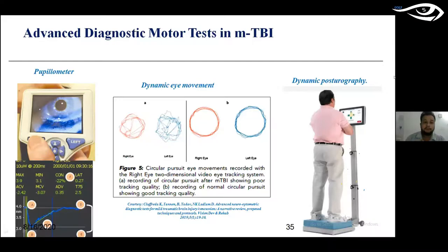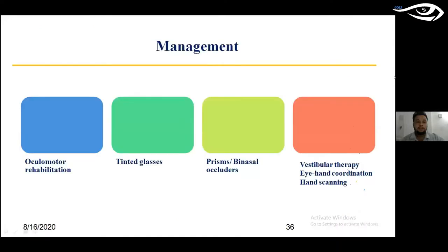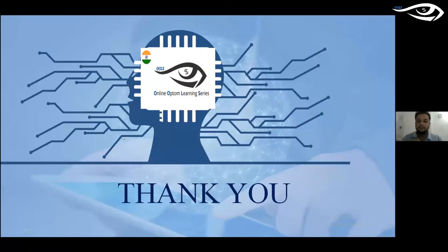In summary, oculomotor rehabilitation addresses accommodation, vergences, and reading deficits. Binasal occluders help with visual motion sensitivity. Prisms address visual field defects and spatial localization. Vestibular therapy is indicated for patients with vestibular dysfunction, balance issues, and poor hand-eye coordination. It's important to emphasize that TBI management is a team effort involving neuropsychiatry, physiologists, and other specialists — not just optometric management alone.